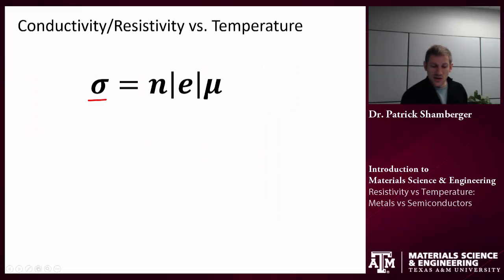Once again if we want to think about how something, in this case temperature, affects conductivity or resistivity, we want to think about how it affects the different terms that contribute to conductivity. So n, again n is the number of free carriers in the system. So how many particles do I have moving around?